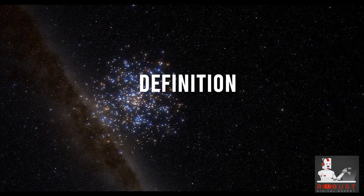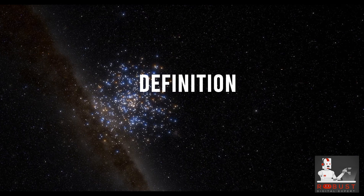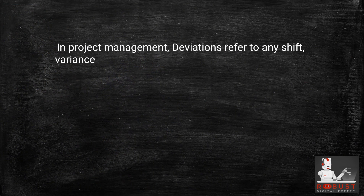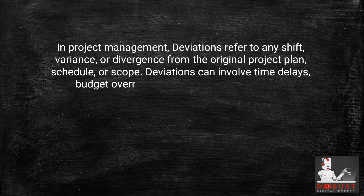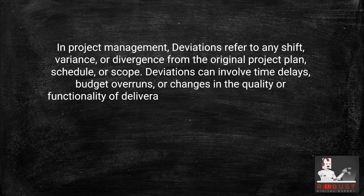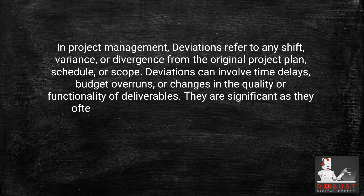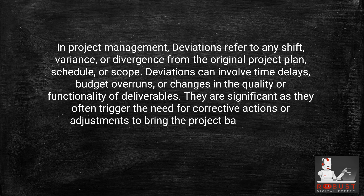Definition: In project management, deviations refer to any shift, variance, or divergence from the original project plan, schedule, or scope. Deviations can involve time delays, budget overruns, or changes in the quality or functionality of deliverables. They are significant as they often trigger the need for corrective actions or adjustments to bring the project back on track.